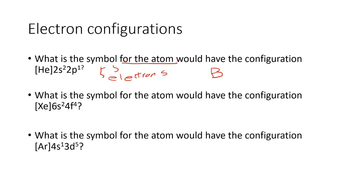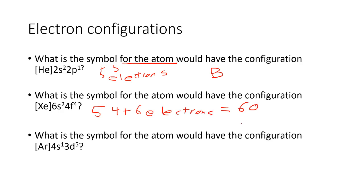What is the symbol for an atom with the configuration [Xe] 6s² 4f⁴? Xenon contains 54 electrons, and we add 6 more, giving us 60 electrons total. Looking for the element with 60 electrons takes us down into the F block, and we get to neodymium, represented by the symbol Nd.